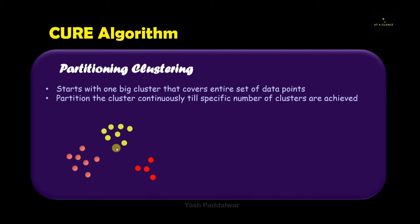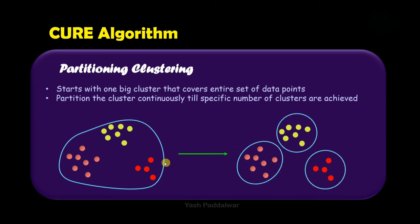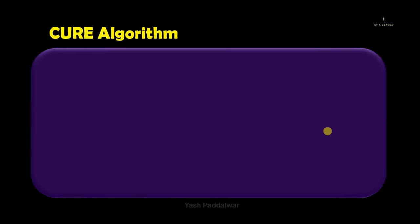As an example, consider these data points. Partitioning clustering says we take every single data point into one big initial cluster, then continuously divide it so the specified number of clusters are achieved. You can see we have divided this big cluster into three different clusters based on the similarities between them. This backend process of finding similarities goes on continuously until the specified number of clusters is made.